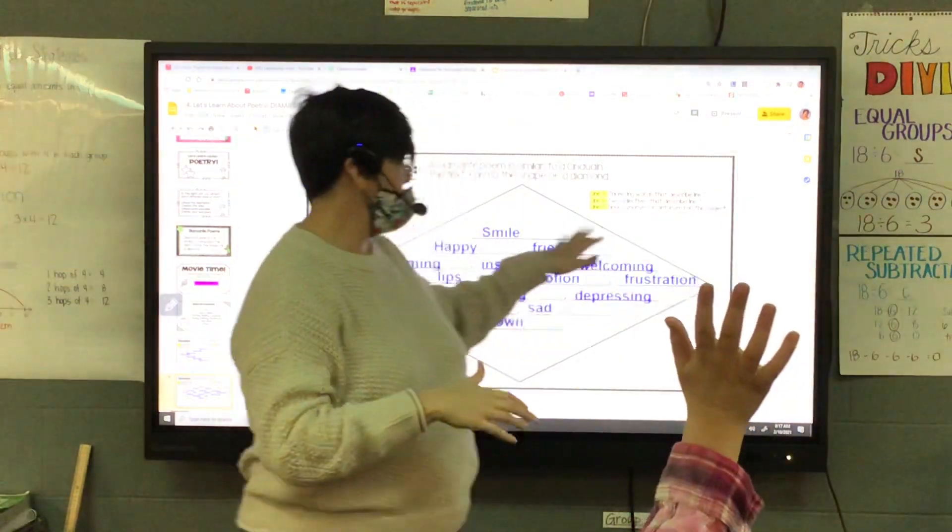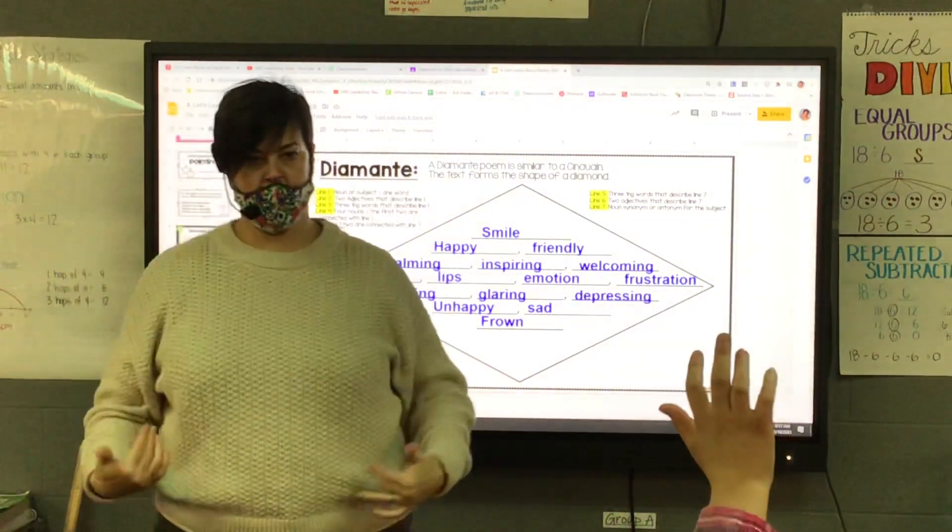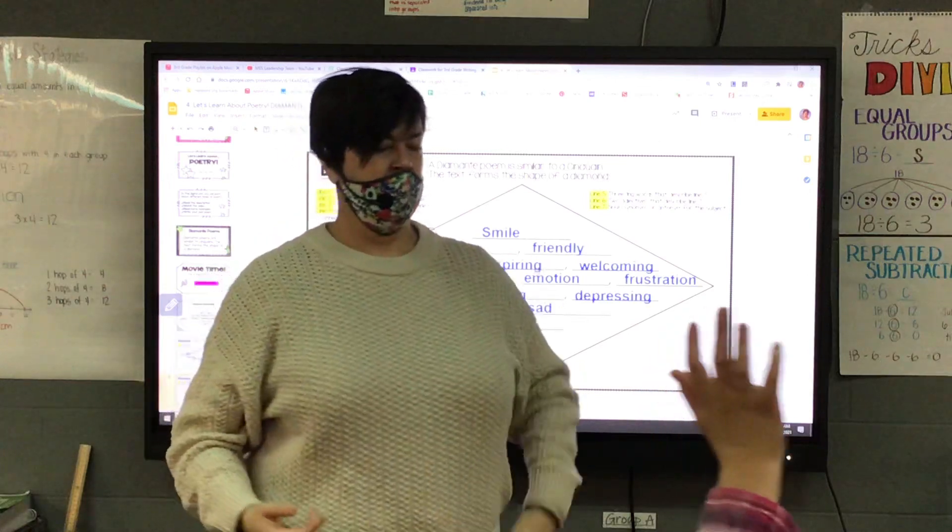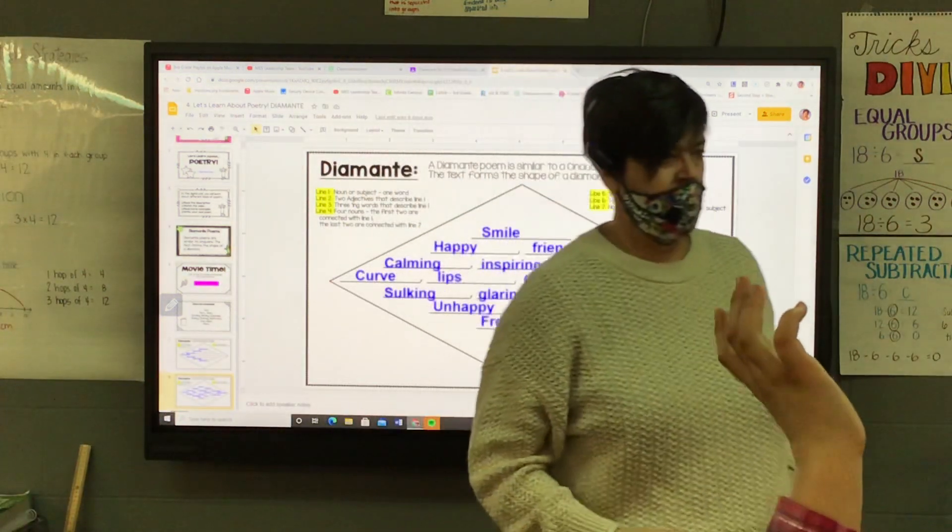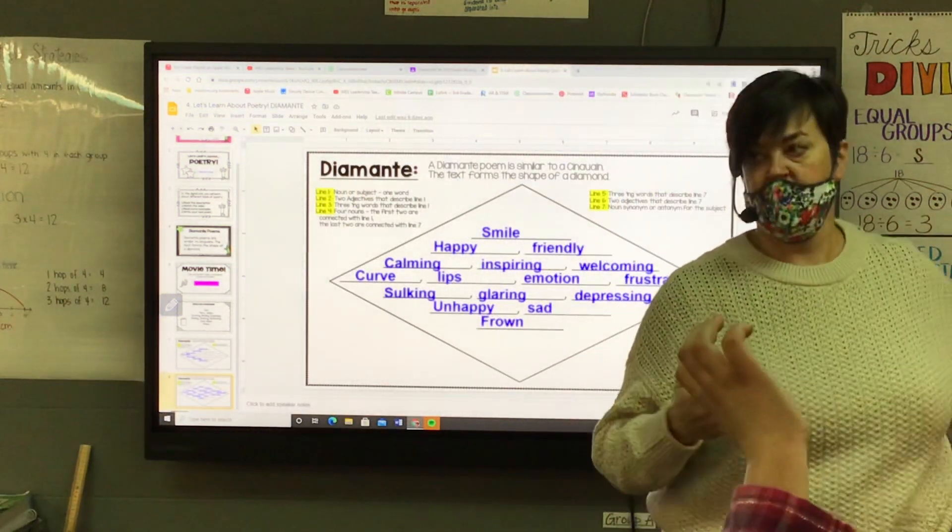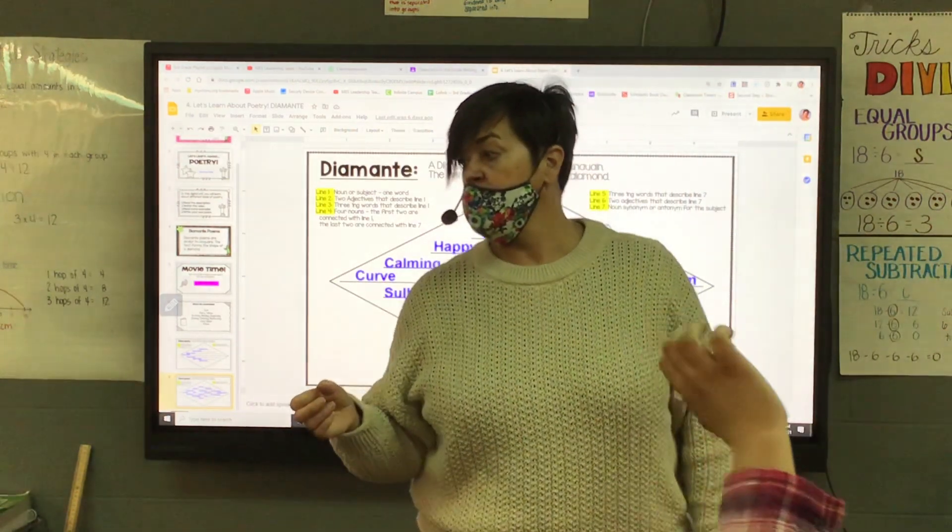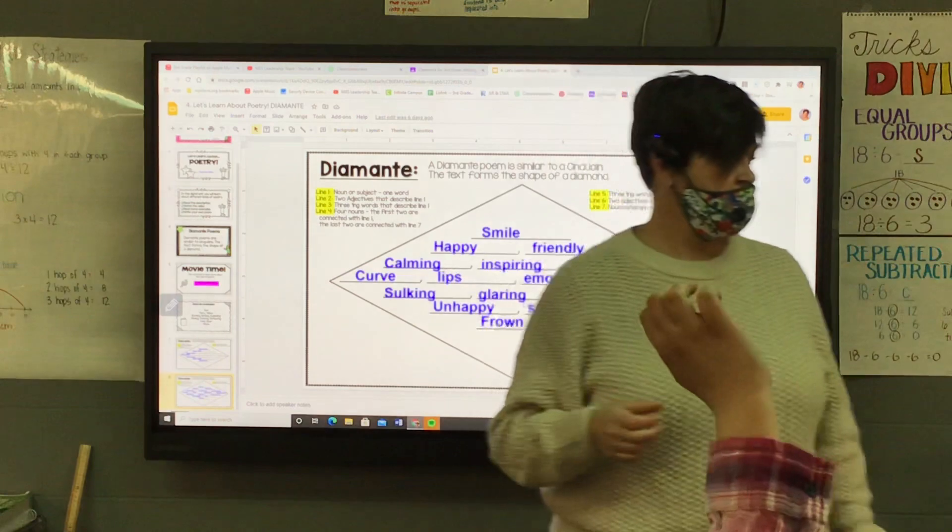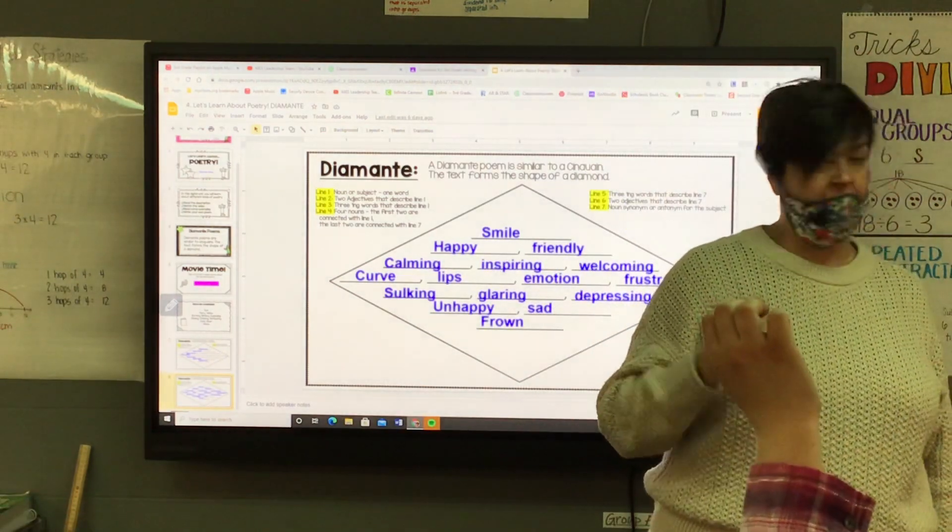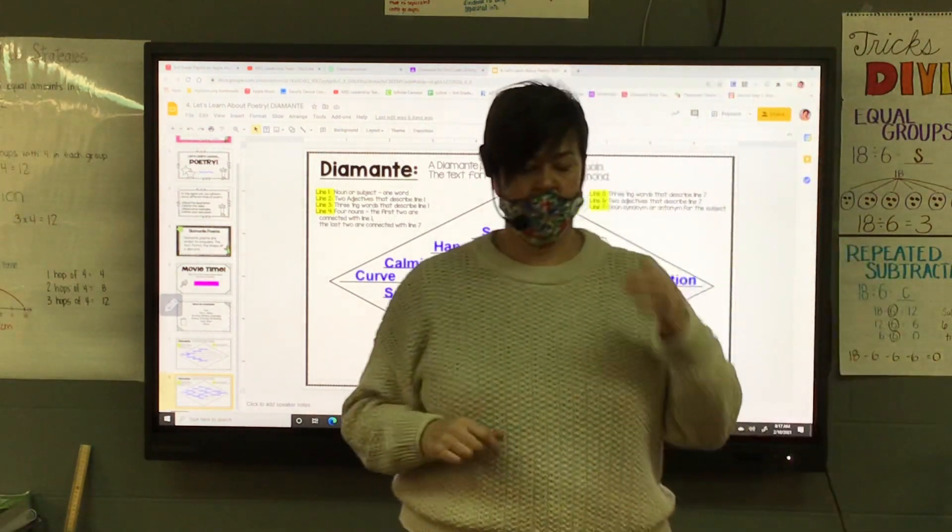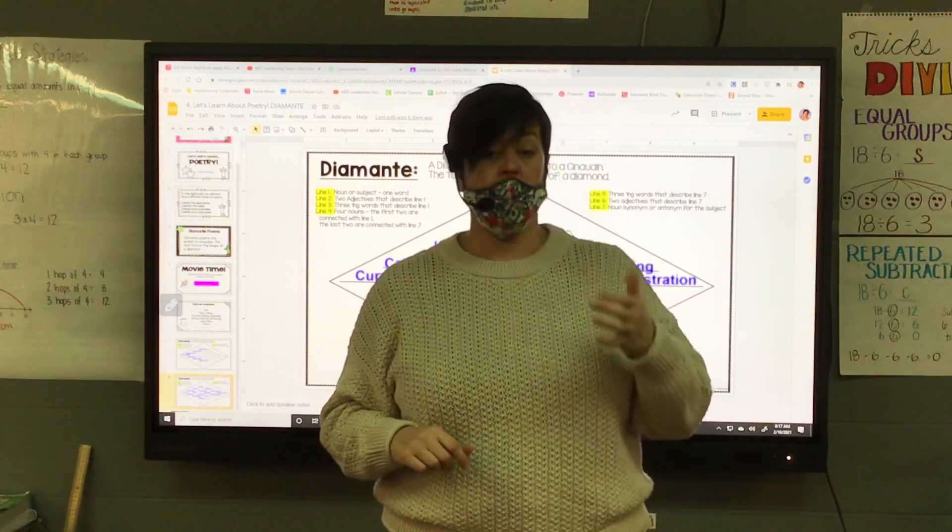Like here we did smile, frown. Fire and water. Fire, water. Sun, moon. Sun, moon. Is that what you said? Cat, dog. Cat, dog. Hot, cold. Hot, cold.